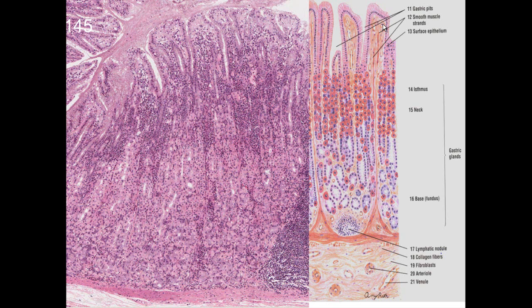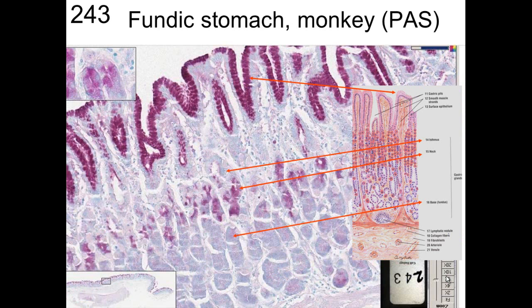In the fundic stomach, the large cells are parietal cells, in contrast to the chief cells. Parietal cells produce hydrochloric acid while chief cells produce pepsinogen. When the stomach is stained with PAS, the surface mucus cells clearly show mucus, and the mucus neck cells in the isthmus region also stain positive — hence the name mucus neck cells.